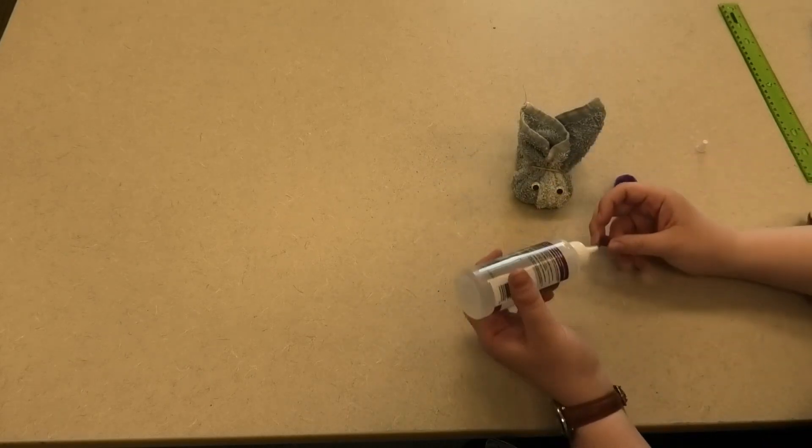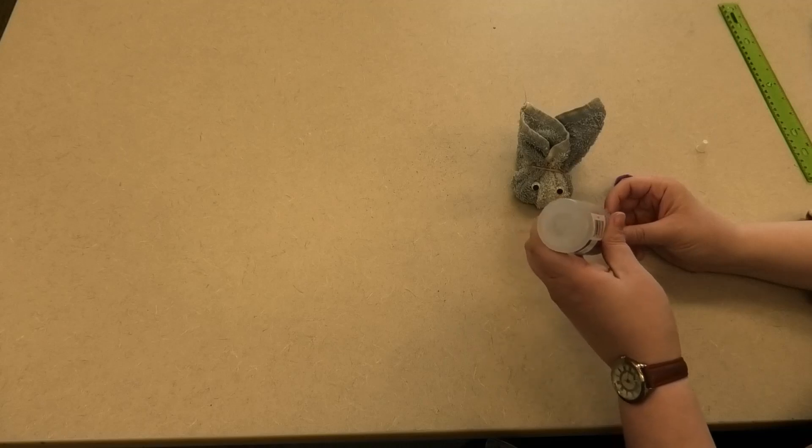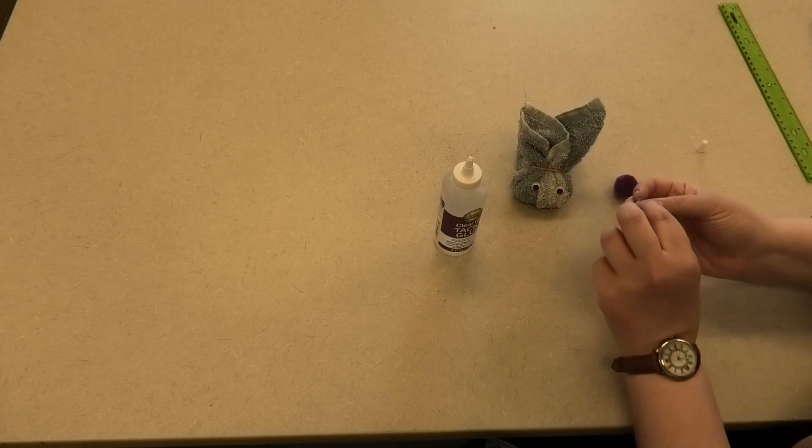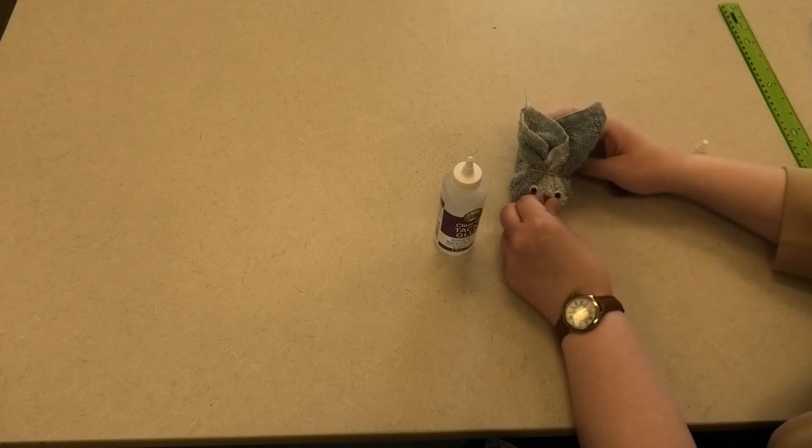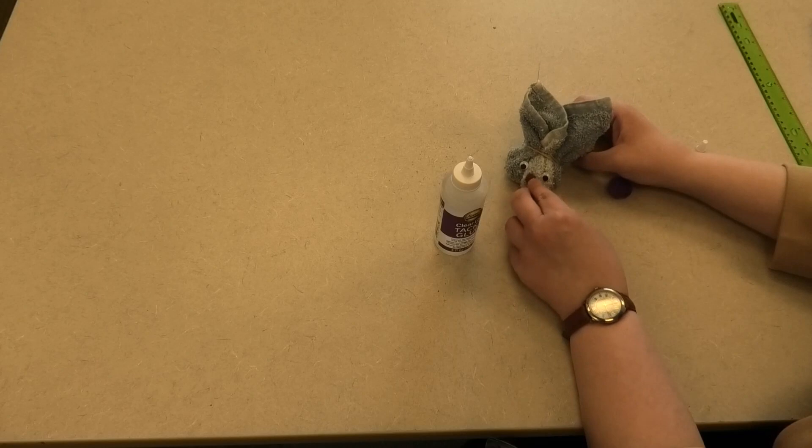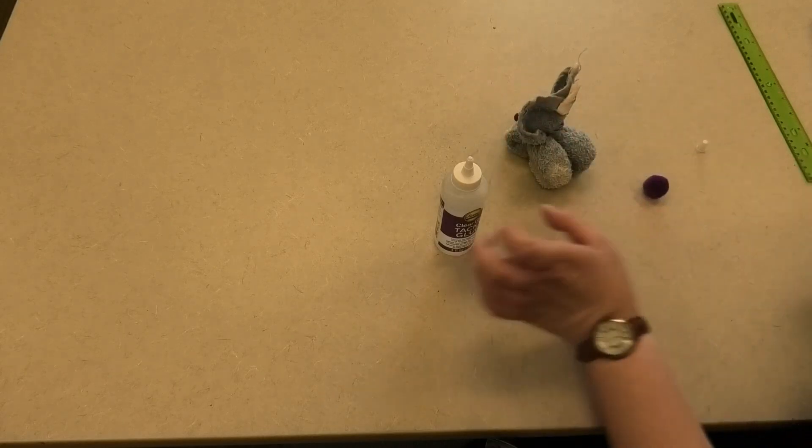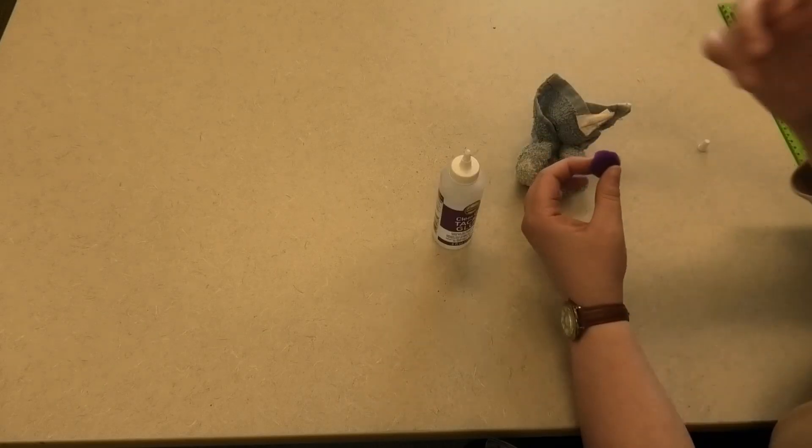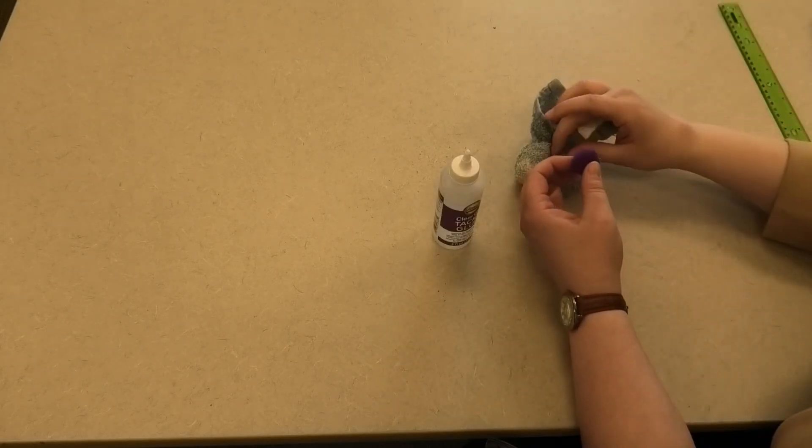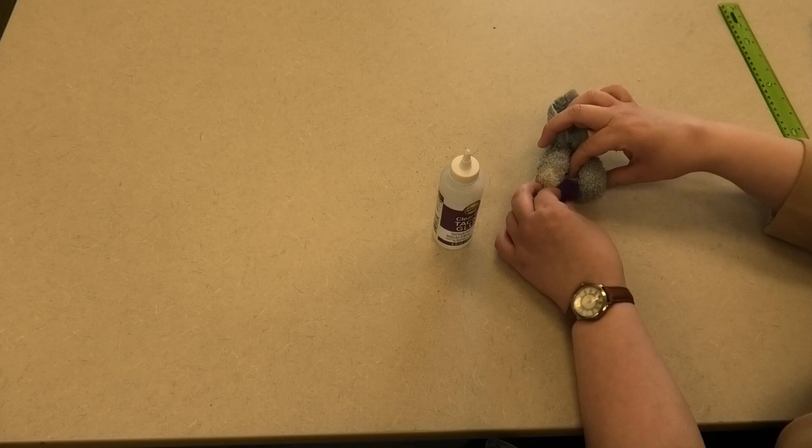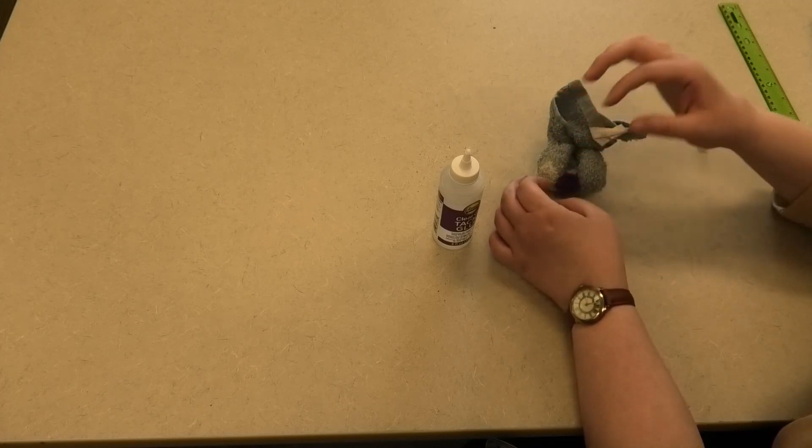And then using the smaller pom-pom, I'm just going to give our little bunny here his own nose. And flipping him around, I'm just going to attach a little tail. Before gluing the tail down, I'm just going to open it a little bit so you can kind of see. It's almost like a little bowl where the fold meets. I'm just going to attach the tail right between the two sides of the crease, just like so.